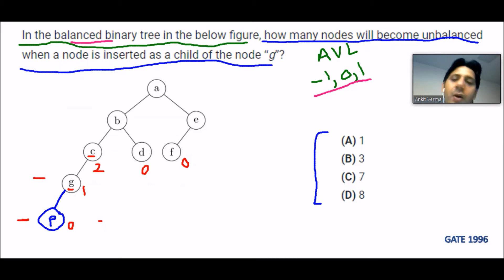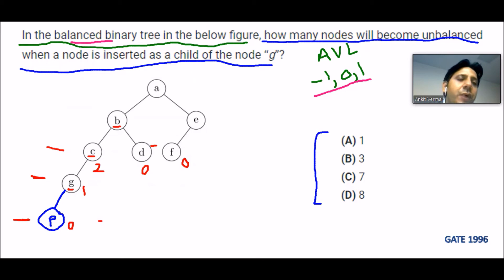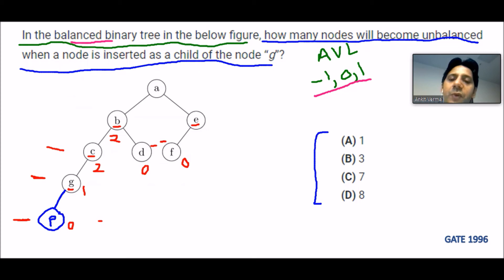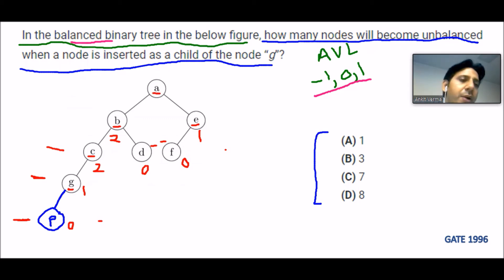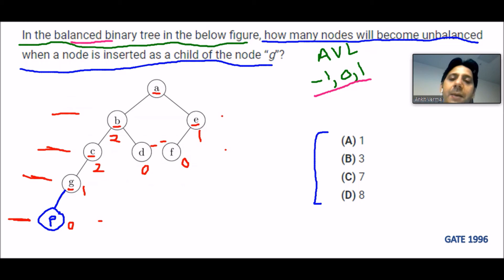For node B: there are three levels on the left hand side and only one level on the right hand side, so 3 minus 1 is 2 — the balancing factor of B is 2. For node E: one level on the left hand side and nothing on the right, so 1 minus 0 is 1 — balancing factor of E is 1. For root node A: four levels on the left hand side and two levels on the right, so 4 minus 2 is 2 — the balancing factor of A is 2.